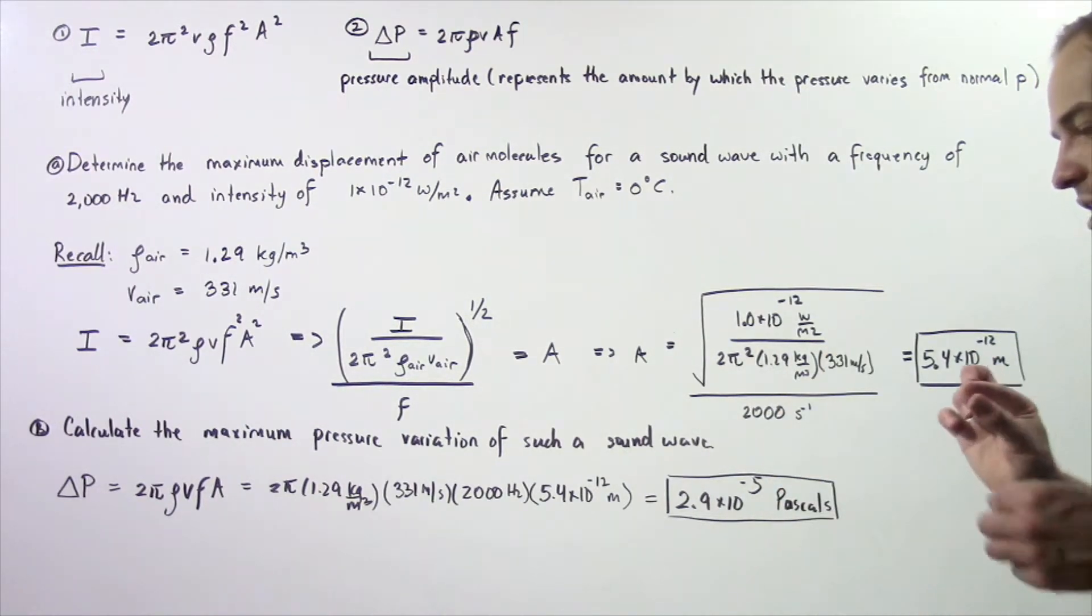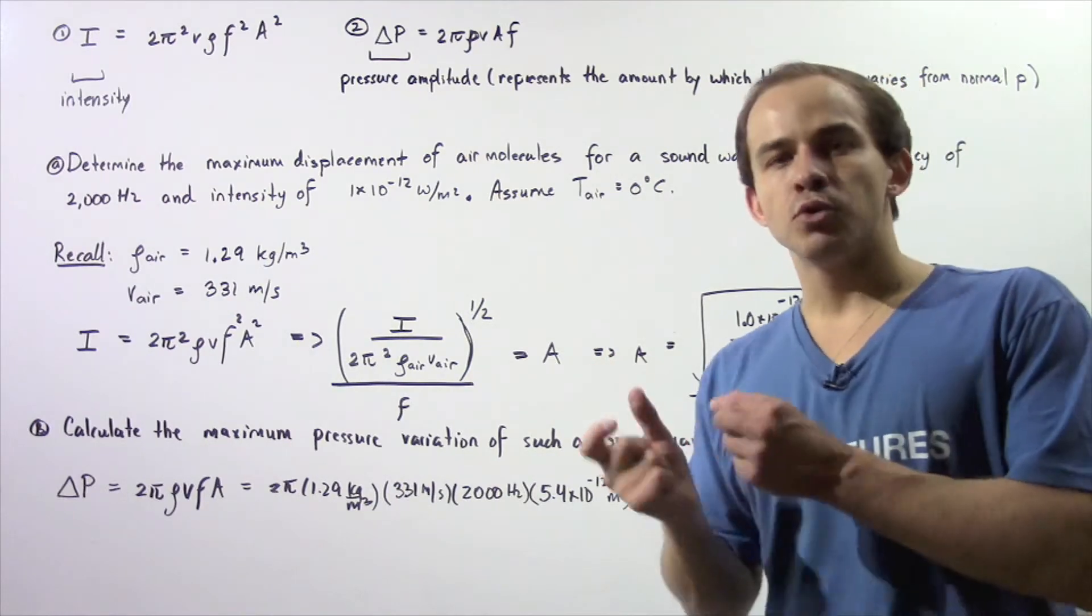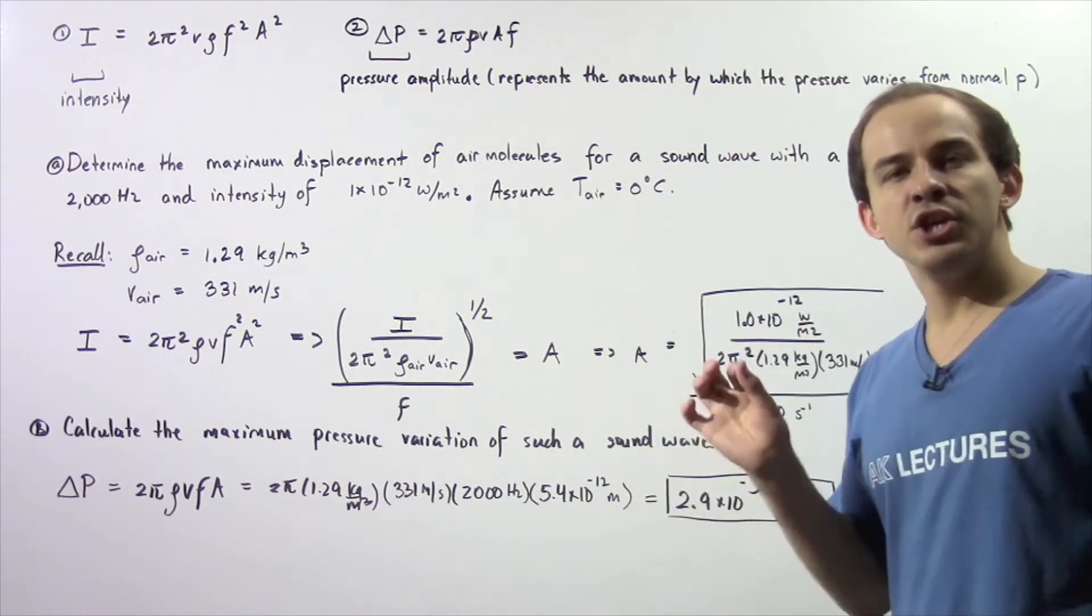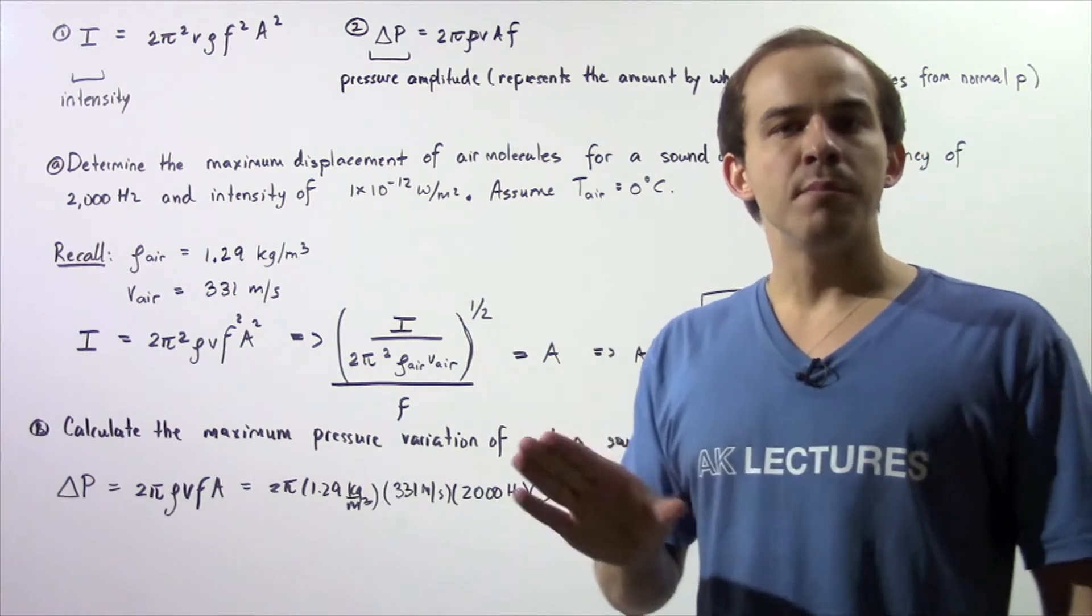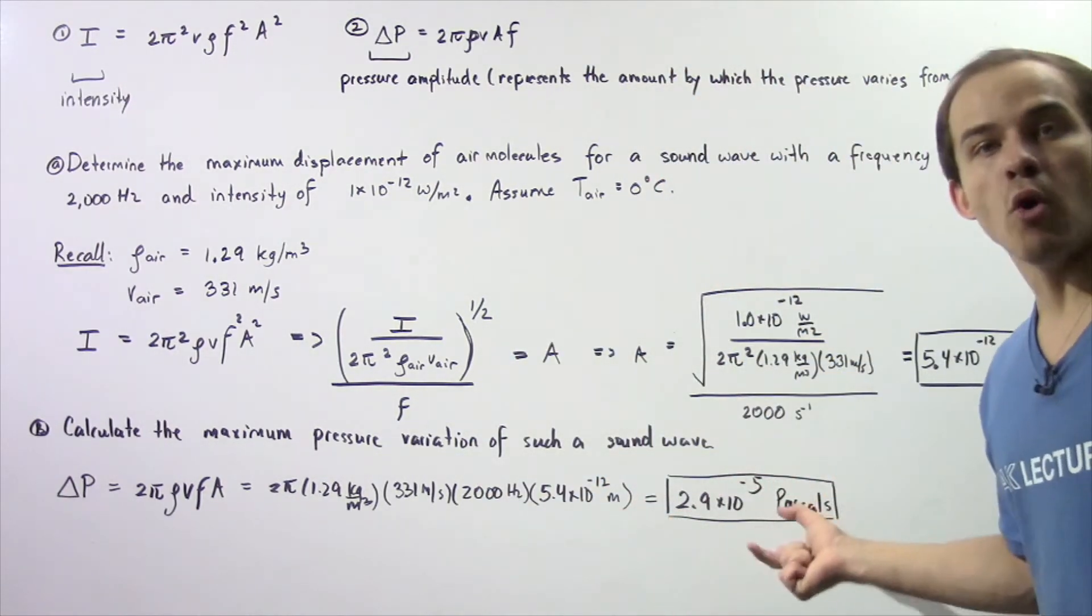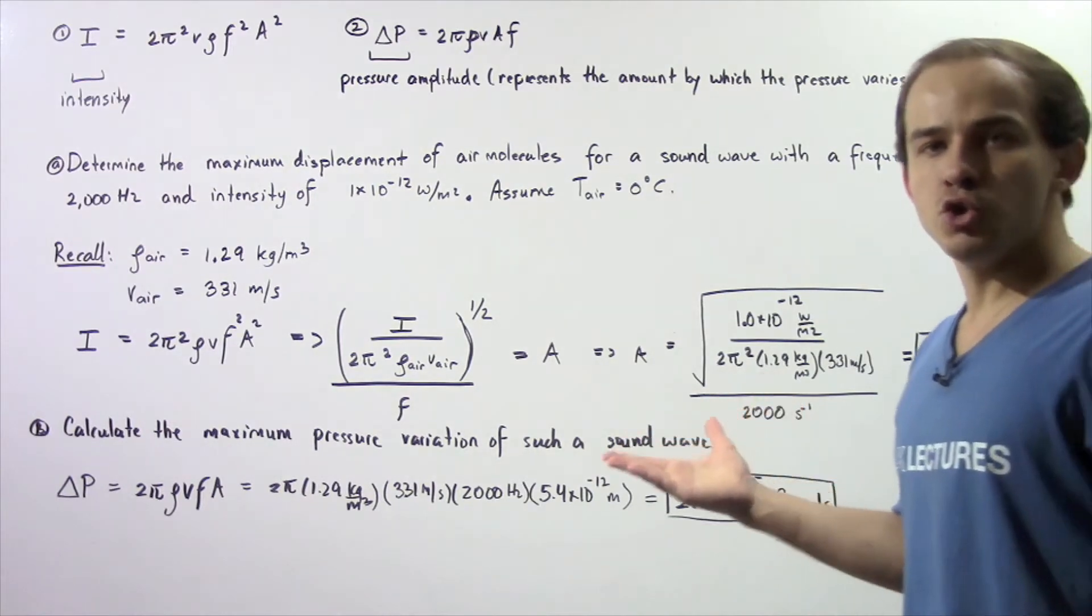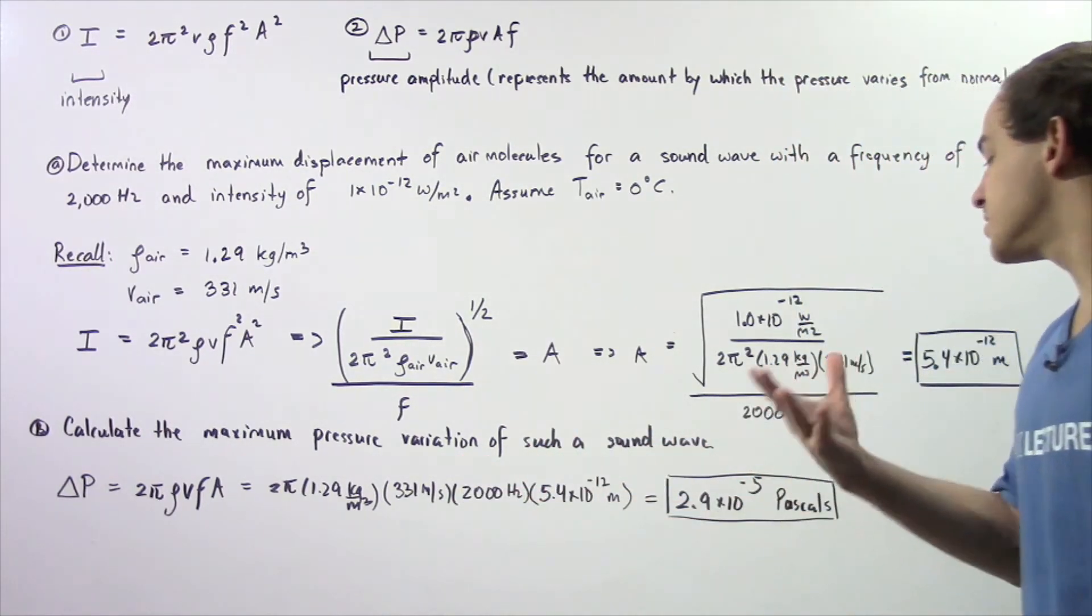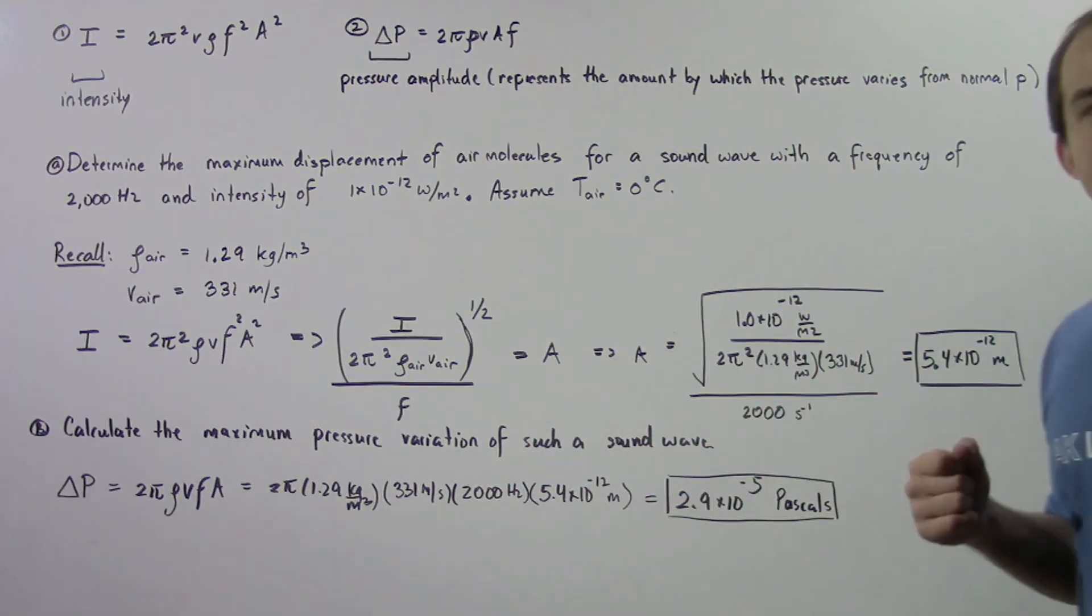When there is a change in pressure given by this quantity, the human ear is capable of detecting that change. This is an extremely small change compared to, let's suppose, the atmospheric pressure at sea level.